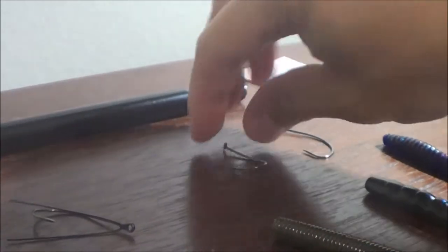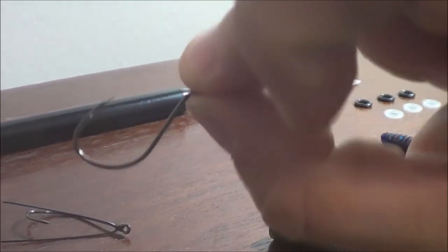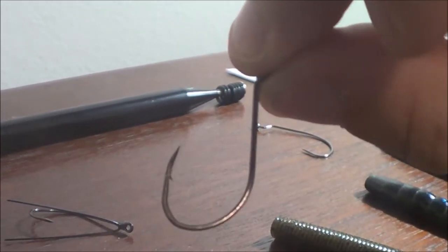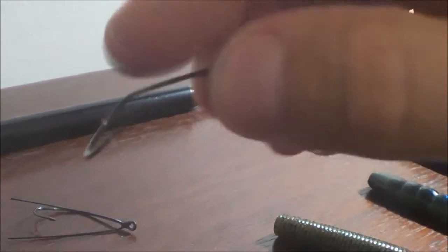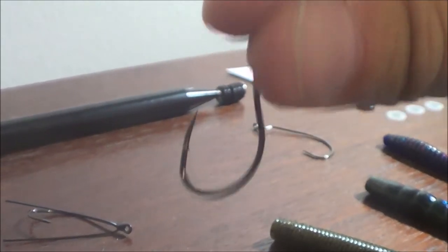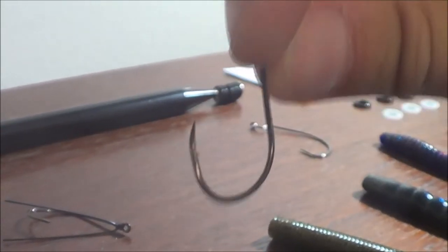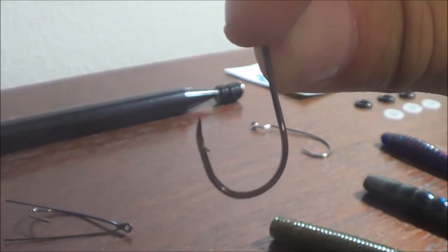I don't prefer them if I can get away with it. I'd rather just use a regular open hook like this. This is a 1-0 Eagle Claw, just a live bait hook. I seem to hook up a little bit better with hooks without the weed guards on them.